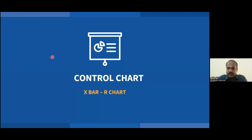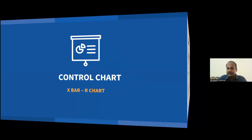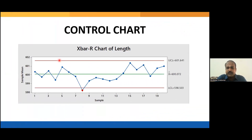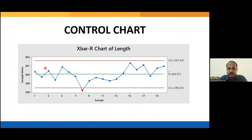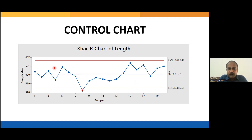This session is on control charts, with emphasis on understanding X-bar R charts. Any control chart has a center line, an upper control limit above it, and a lower control limit below it. If all the points in your control chart are inside the control limits, you can conclude that your process is under statistical control — the process is stable, people are working as per the SOP, and everything is in order.